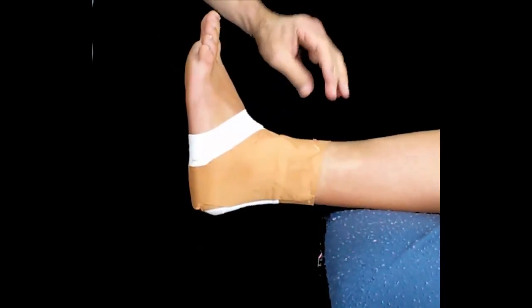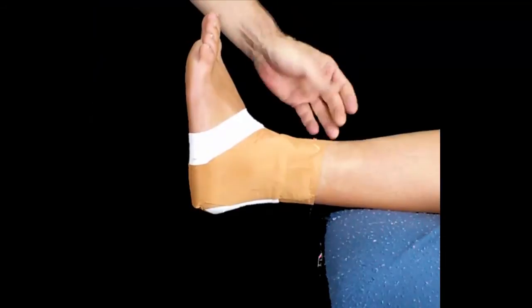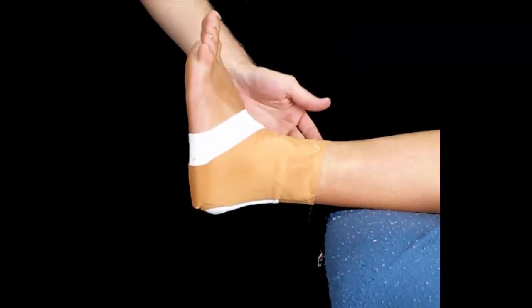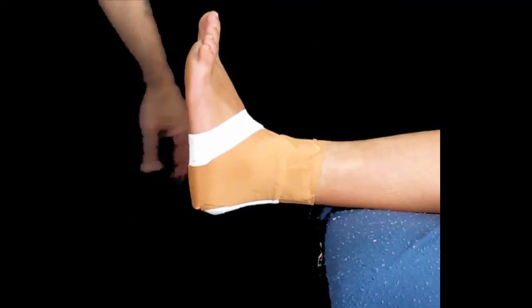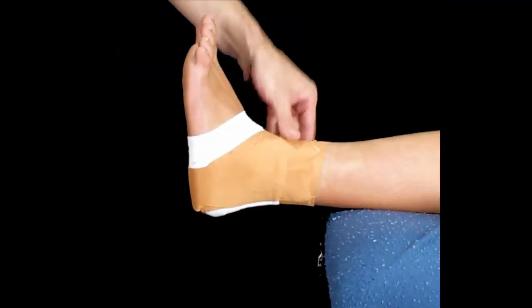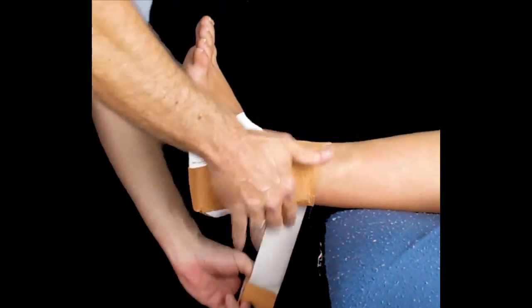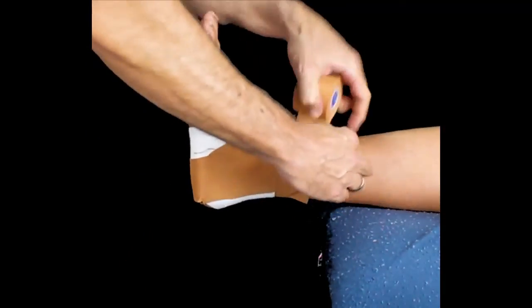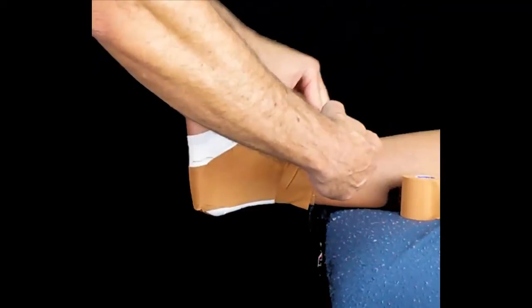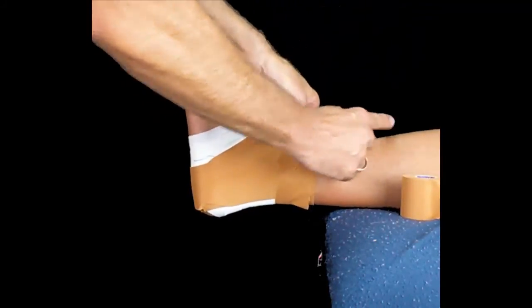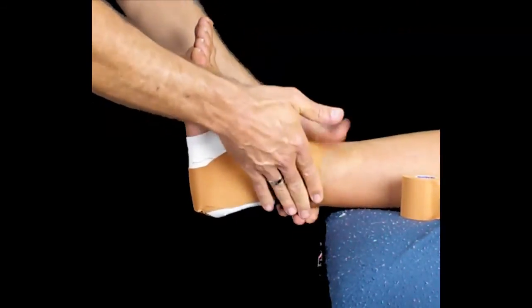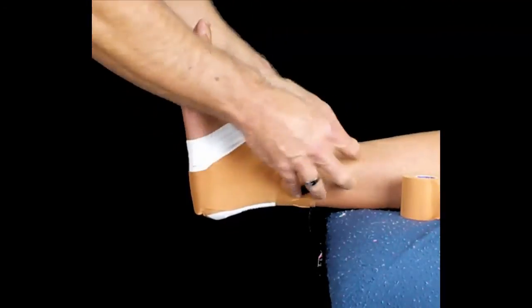We've done our anchor, our two stirrups going from the inside to the outside, and our four figure sixes. Now it's time to lock the job off. Go over the top of those strips. Once again, this has no tension on it because we don't want to put tension around the calf.